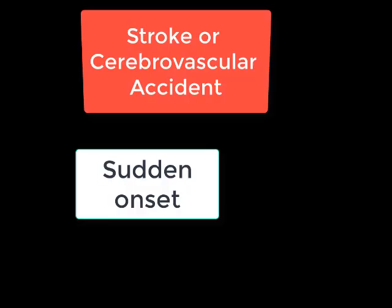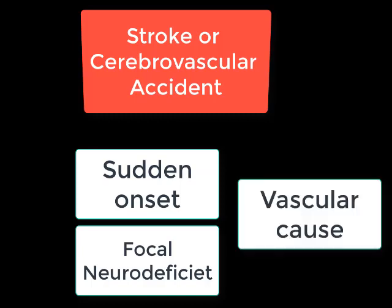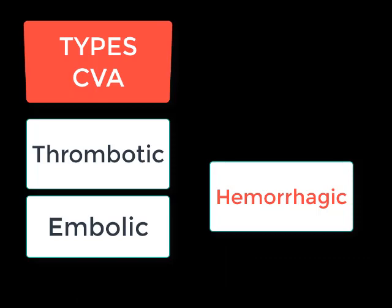Next we had seen the definition of stroke, or cerebrovascular accident, which is a focal neuro deficit — for example, hemiparesis or hemiplegia — which occurs suddenly and is due to a specific vascular cause. Among the vascular causes, there are mainly two types of stroke: ischemic and hemorrhagic. Ischemic stroke is further divided into thrombotic stroke or embolic stroke.